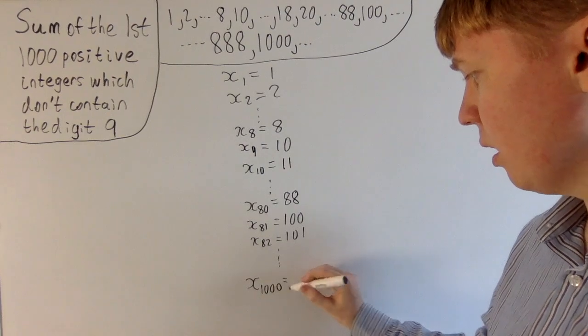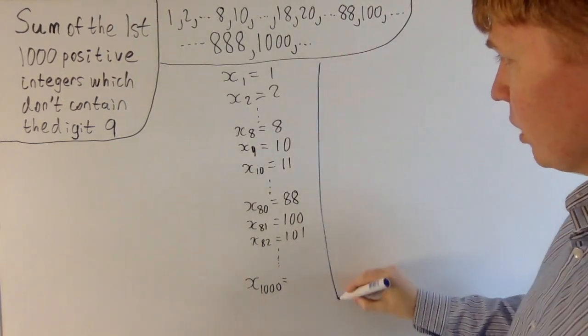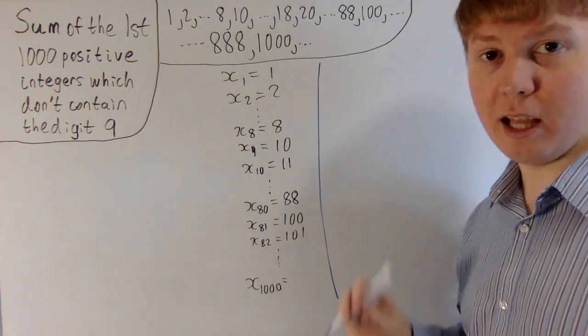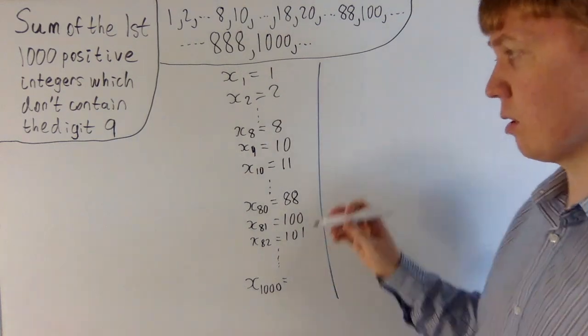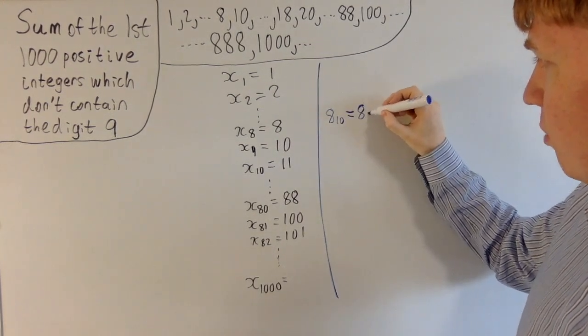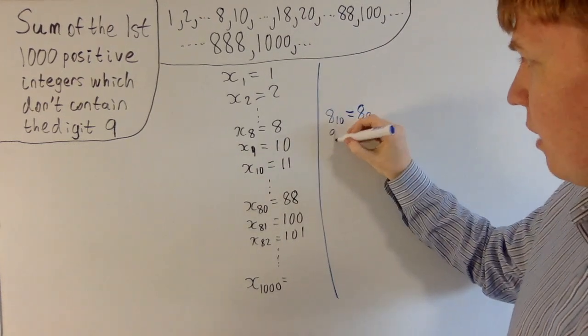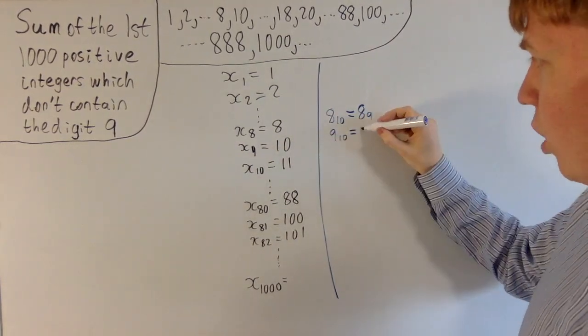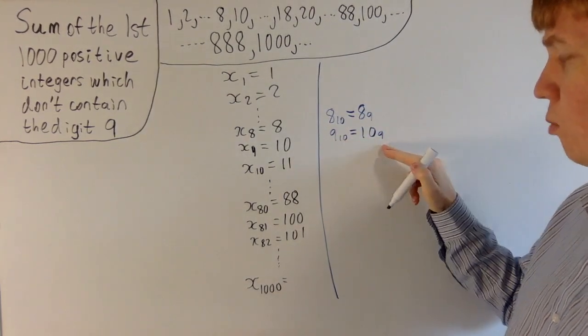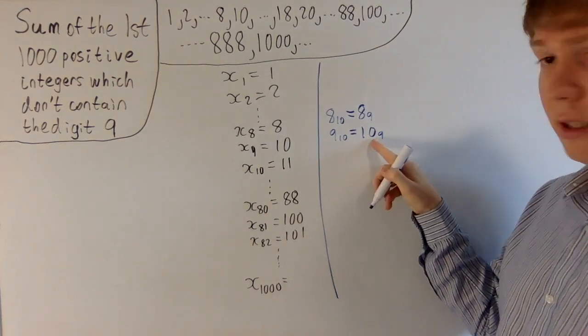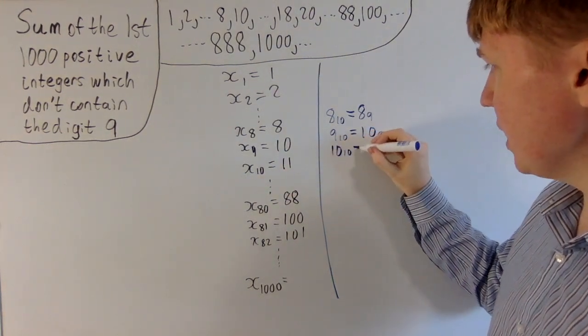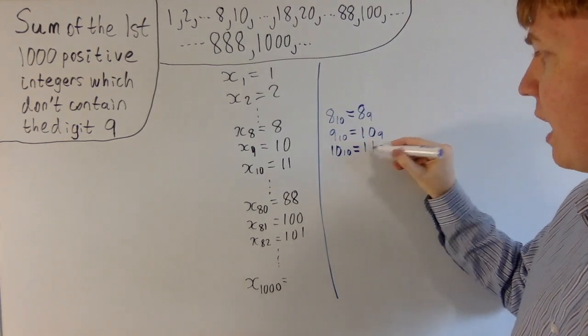What we're really interested in is what is the value of x₁,₀₀₀? There's a really nice way of seeing this, because if we look at what's going on here with the eighth term is 8, the ninth term is 10, and the tenth term is 11, if you've done any work using different base systems, you might spot that 8 in base 10, if you wanted to write this in base 9, it would still look like 8. 9 in base 10, if you wanted to convert this to base 9, it would now look like 1, 0 in base 9. So here the notation, the subscript, is just saying what base we're working in. So here you've got 1 nine and 0 units, to give you 9. Now if you want to write 10, convert this from base 10 into base 9, this will look like 1, 1 in base 9. 1 nine and 1 unit.